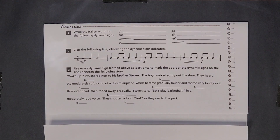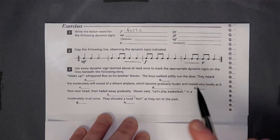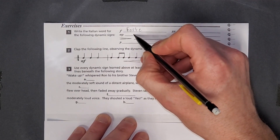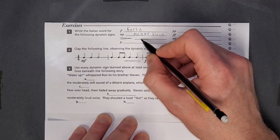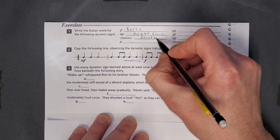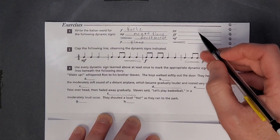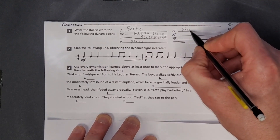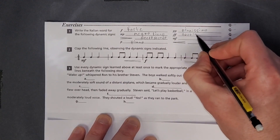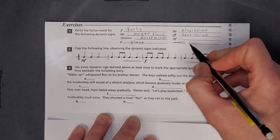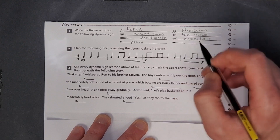Write the Italian word for 'f' — a lot of this is memory; you can look at the top of the page if you forget. MP is mezzo piano. This sign going from big to small is going to be your decrescendo or diminuendo. P is piano. Double P — pianissimo. Two F's is fortissimo. MF is mezzo forte.